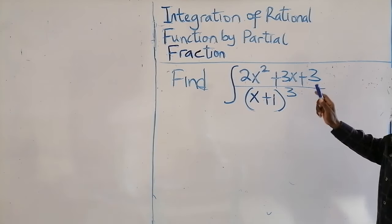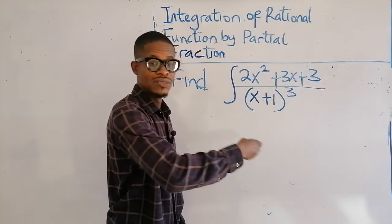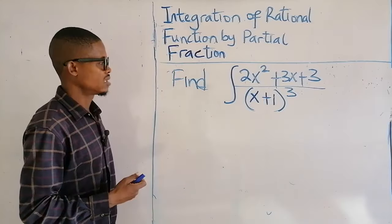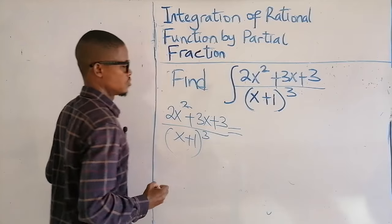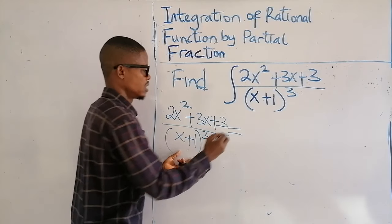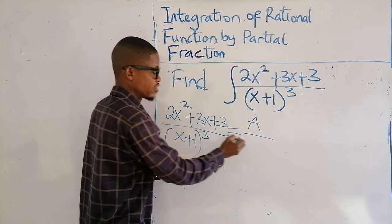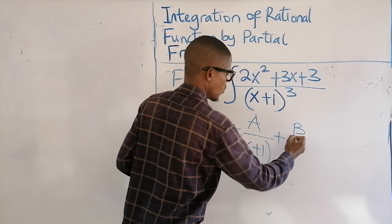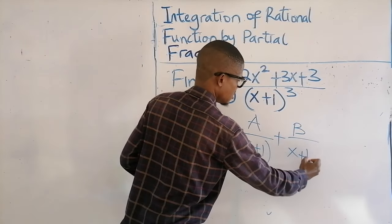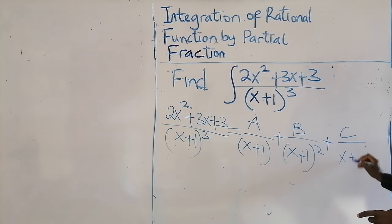First observation: the second observation is that the denominator is a repeated linear factor — x plus 1 repeats 3 times. So what we are going to do is write the fraction equal to: A over (x+1), plus B over (x+1)² , plus C over (x+1)³. And that ends there.